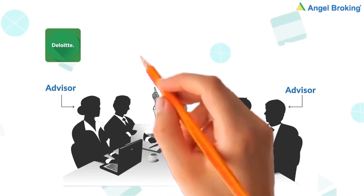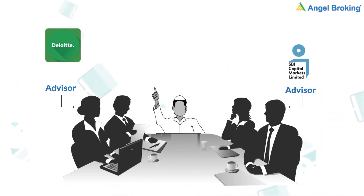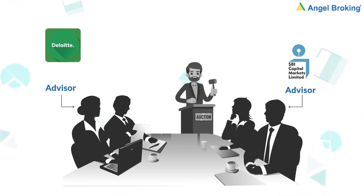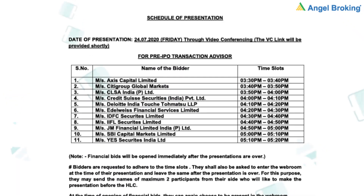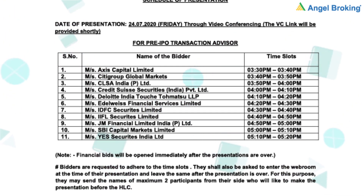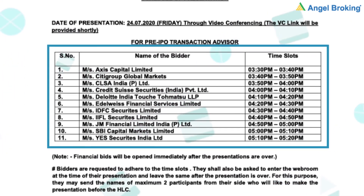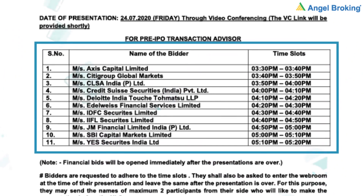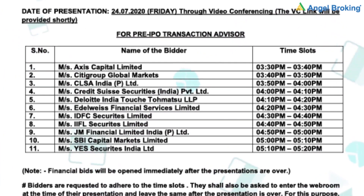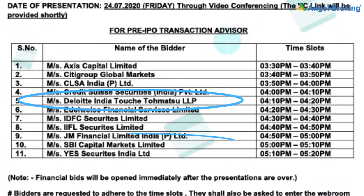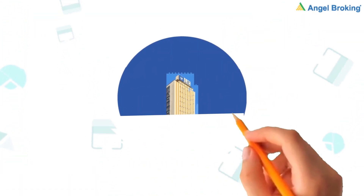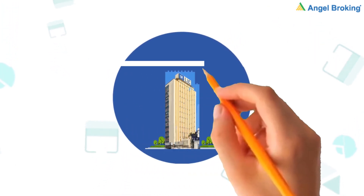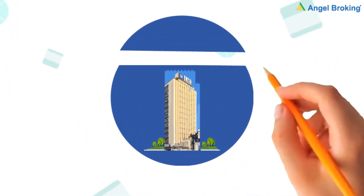A consulting firm and SBI Capital Markets have been hired to help the government arrive at a valuation for LIC. These two companies were selected from a bidding process. As you can see from this document, 11 companies presented in front of Department of Investment and Public Asset Management. From these, Deloitte and SBI Capital Markets won the bid. Some government insiders are now suggesting that the government might sell as much as 25% of its stake in the IPO.